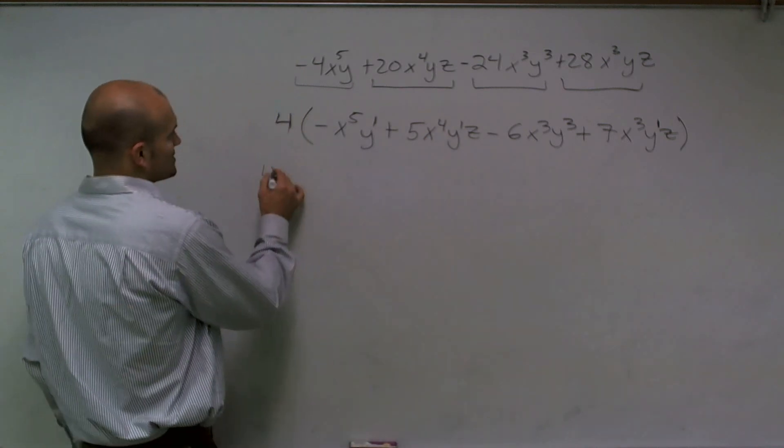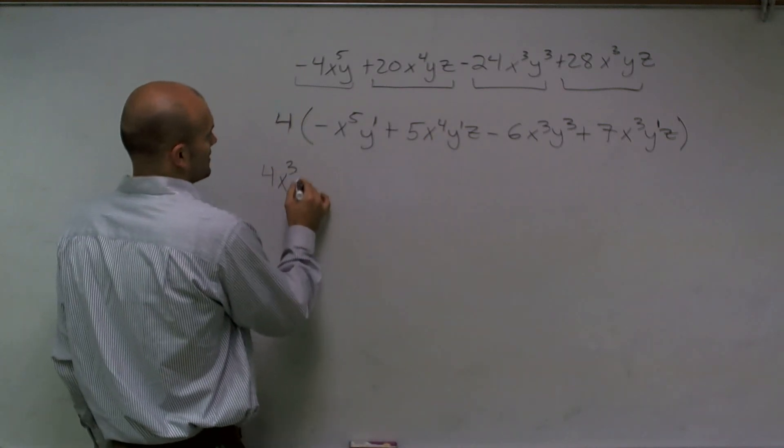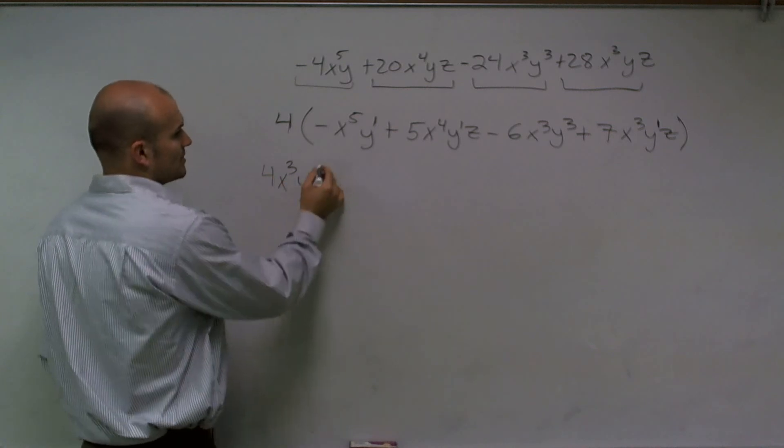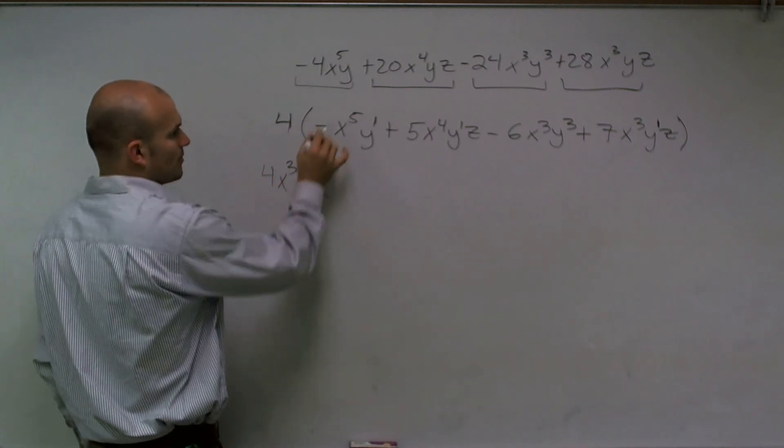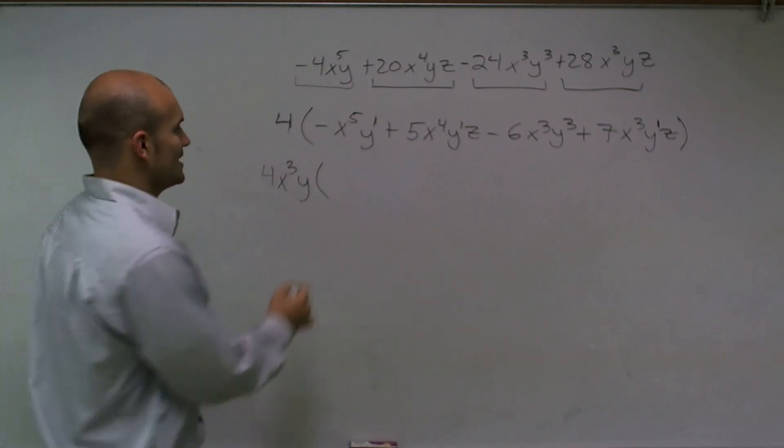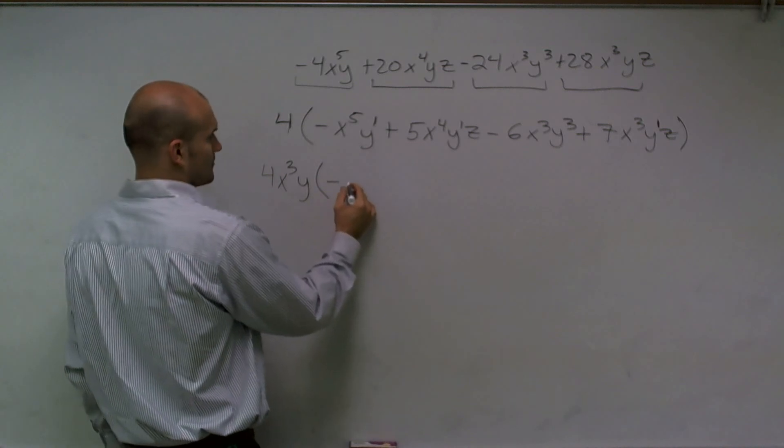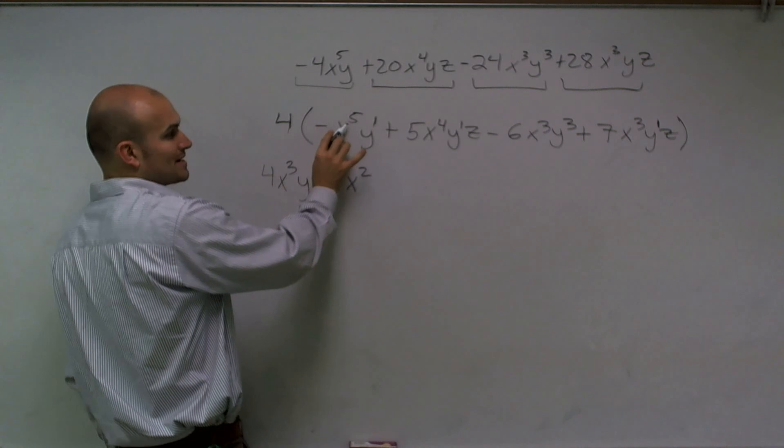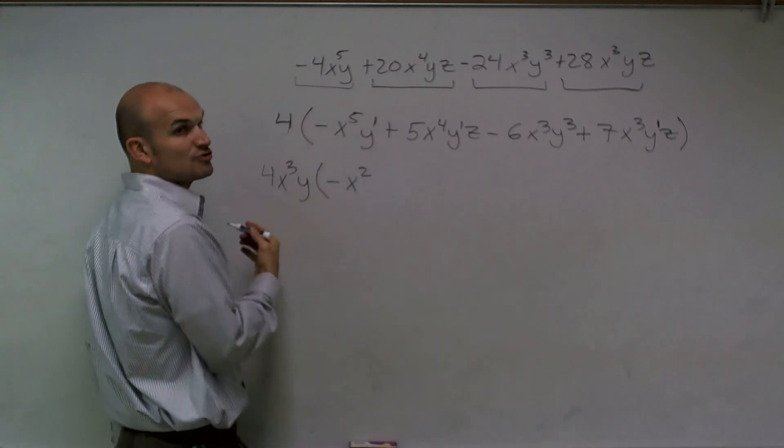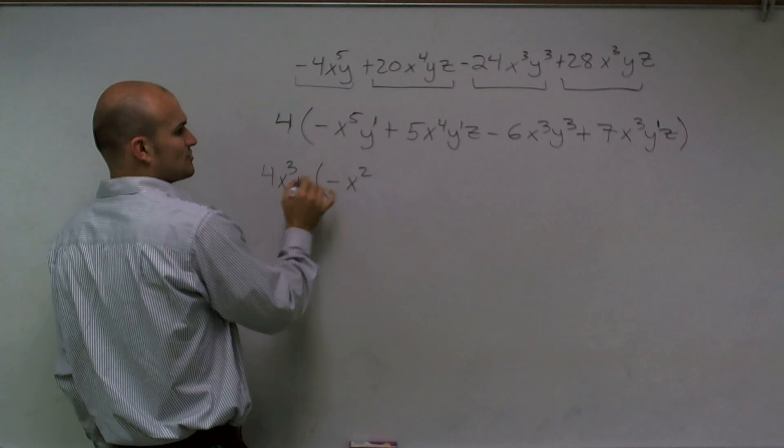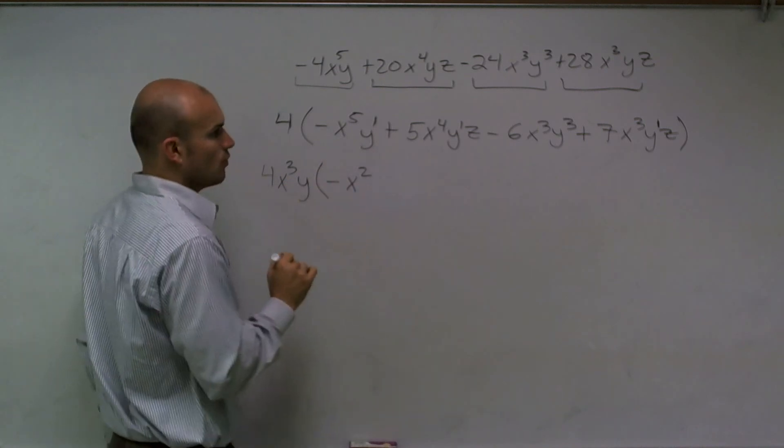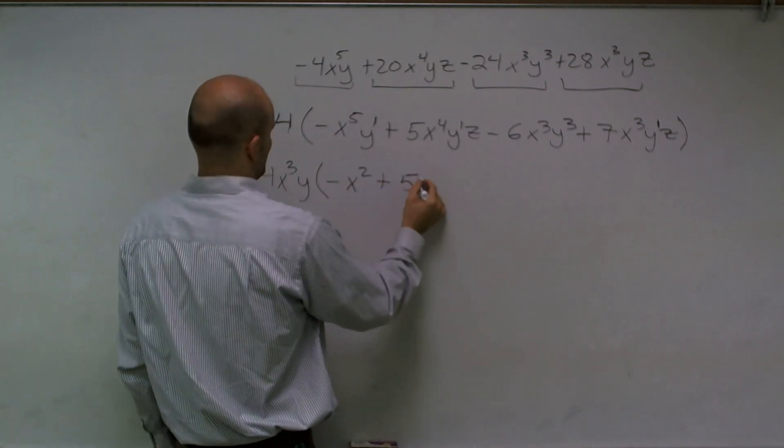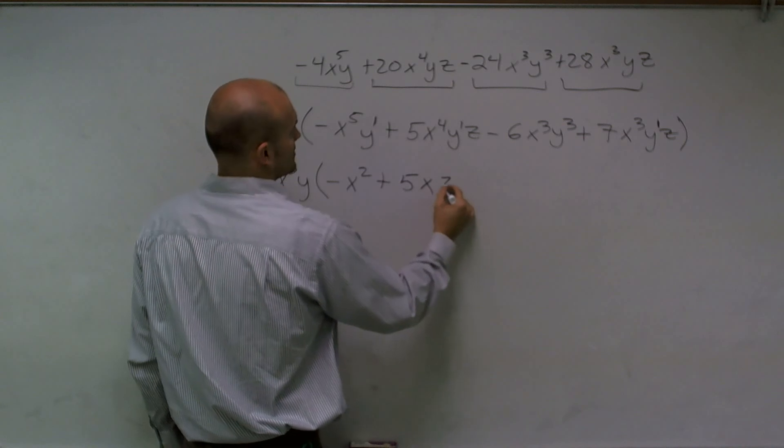So now what I'm going to do is I'm going to factor out a y and an x cubed. So I already factored out my 4, but when I factor out my x cubed, I get a negative x squared, because remember, you're dividing out an x cubed from an x to the fifth. So that's going to subtract your exponents. My y's, when I subtract out, gives me y to the 0, which is 1.